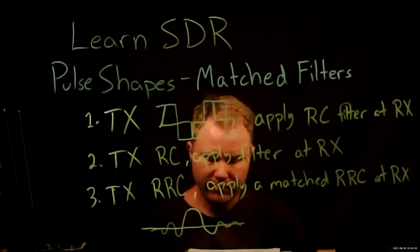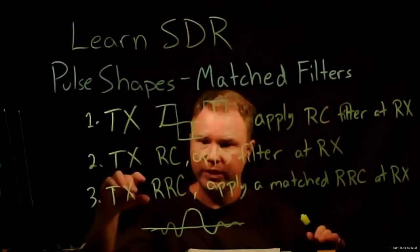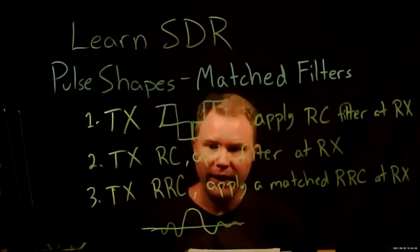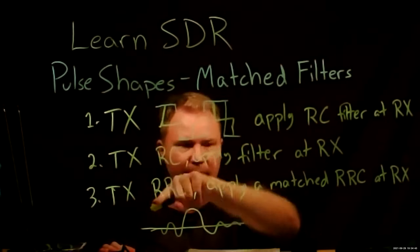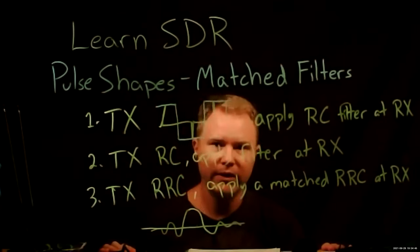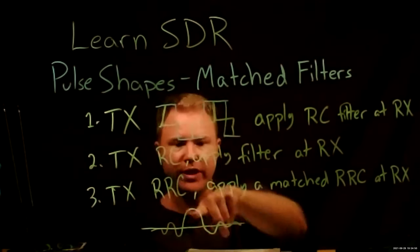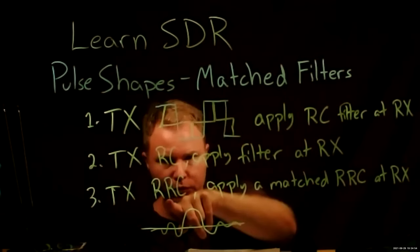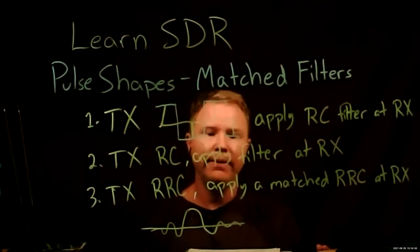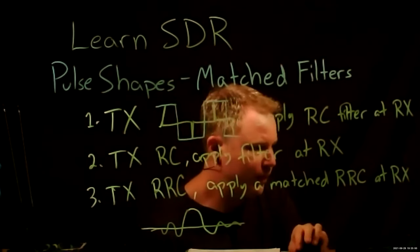We want to correlate against a copy of this. And so that's what we do in a real system, we transmit a slightly modified version, so that when we receive it, we can filter again, which is the same as correlating against a known good copy. And the double filtered root raised cosine, the net effect is to give us a raised cosine filter. So let me show you the simulation again, the new radio.